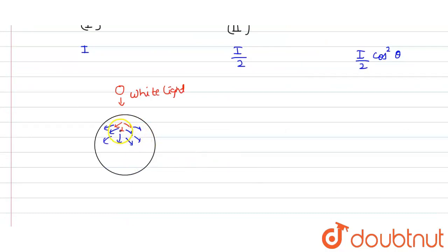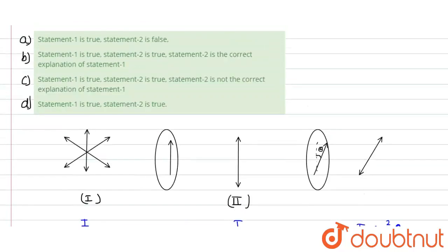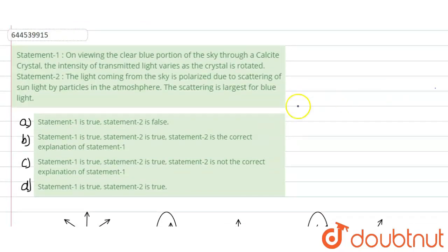That is why we are seeing the sky as blue. Whenever we see in the noon time or in the morning time, the sky is blue, due to the scattering. So this statement is true.